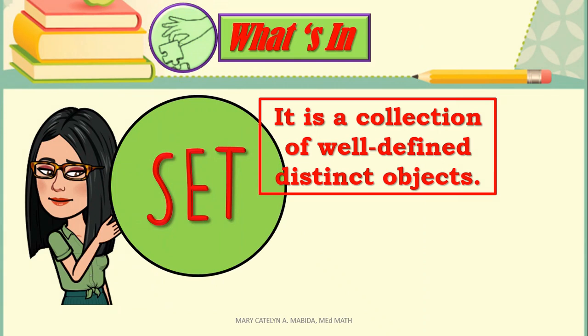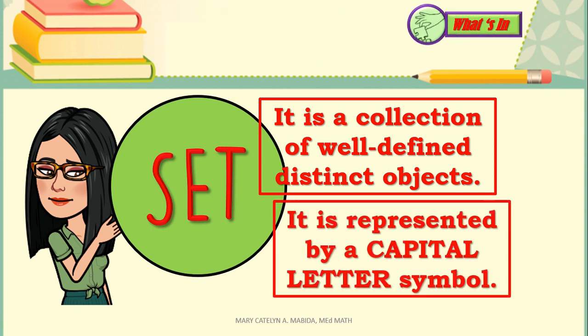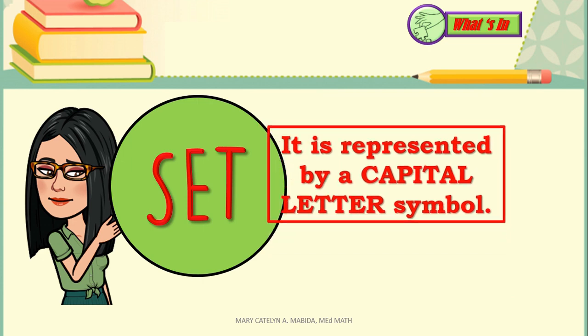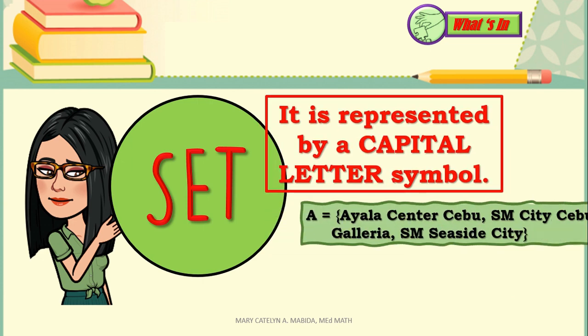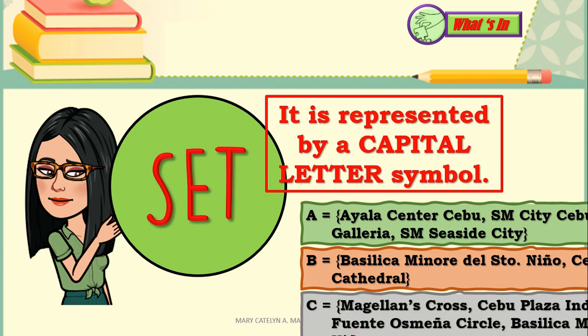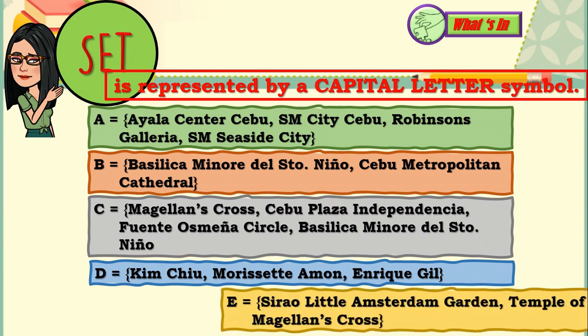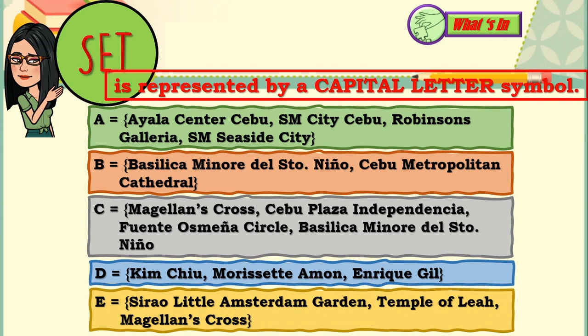What's in? A set is a collection of well-defined distinct objects. It is represented by a capital letter symbol. Sets are simply using capital letters. For instance, Set A is a set of malls in Cebu City. Set B is a set of Catholic churches in Cebu City. Set C is a set of historical landmarks in Cebu City. Set D is a set of Cebuano celebrities. And set E is a set of man-made tourist destinations in Cebu City. Now, take a look at the capital letters that represent each set.